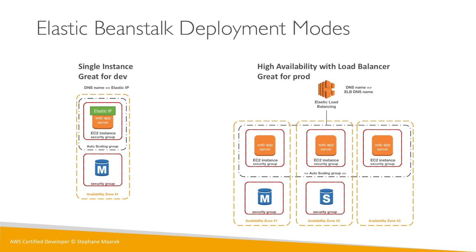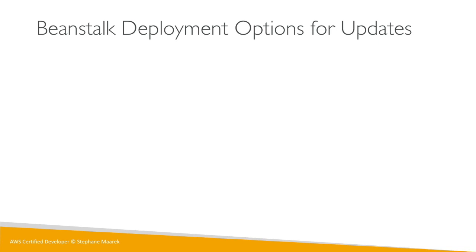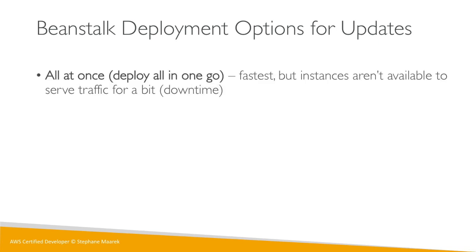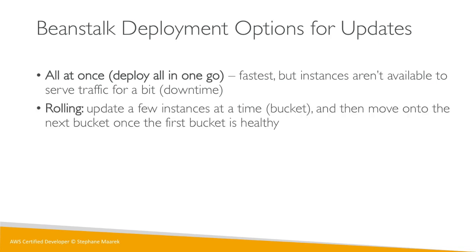When you want to update a deployment, there are four or five different kinds of deployments and you need to know them all. The first is called 'All at Once' — you deploy all your applications in one go. It's the fastest kind of deployment but instances won't be available to serve traffic for a bit, so you'll get downtime. In a rolling update, it will update a few instances at a time — called a bucket — then move on to the next bucket once the first bucket is healthy and updated.